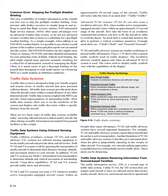Despite their many advantages, TCAS and traffic advisory systems have several important limitations. For example, TCAS and traffic advisory systems cannot detect aircraft that do not have active transponders. Another limitation is that they give unwanted alerts when the pilot is purposefully operating in the vicinity of other aircraft — for example, two aircraft making approaches to parallel runways will probably receive traffic alerts. These alerts can be distracting. The Traffic Information Service, TIS, is a second type of traffic data system. Unlike TCAS, the TIS system does not require each aircraft to have an onboard sensor that locates nearby aircraft. However, each aircraft must have an operational and active transponder to be indicated on the ATC system.